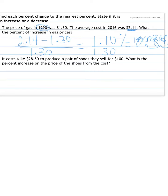Next one, it costs Nike $28.50 to produce a pair of shoes they sell for $100. What is the percent increase on the price of the shoes from the cost?